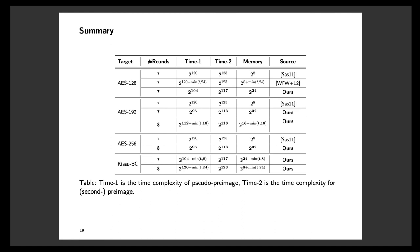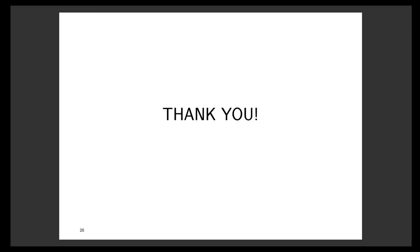This is the summary of the attacks in our paper. All the attacks mentioned above are pseudo-preimage attacks. The column Time1 in this table shows the corresponding time complexity. In order to convert these attacks to preimage or second preimage attacks, an additional procedure is required, and Time2 is the overall time complexity. That's all. Thank you for watching this video.